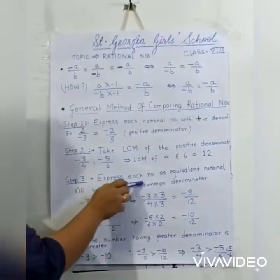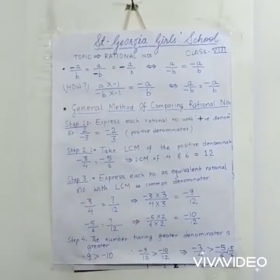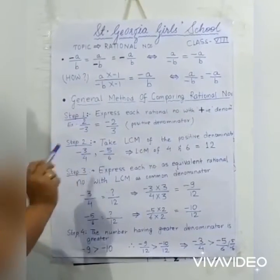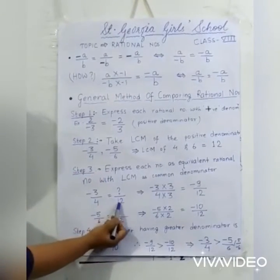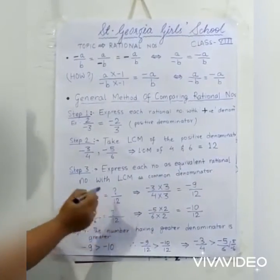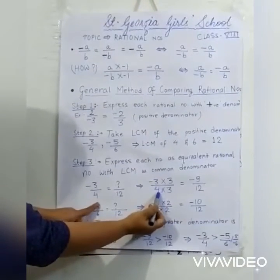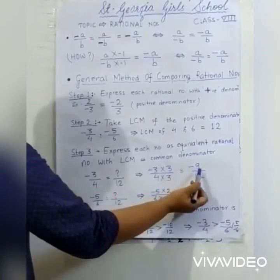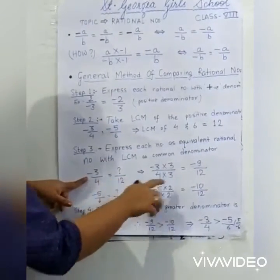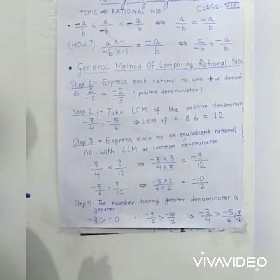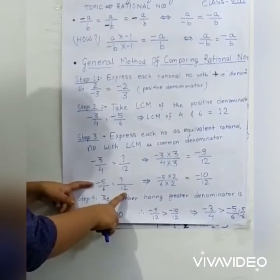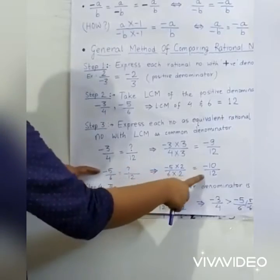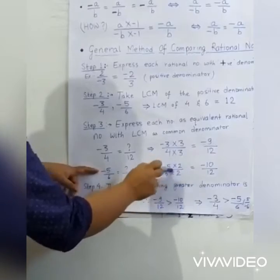Step 3 is to express each rational number as an equivalent rational number with the LCM as the common denominator. For minus 3 by 4, the denominator must become 12. Since 4 multiplied by 3 equals 12, we also multiply the numerator minus 3 by 3, giving minus 9 by 12. For minus 5 by 6, multiply both numerator and denominator by 2 to get minus 10 by 12.